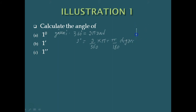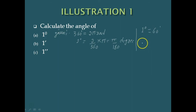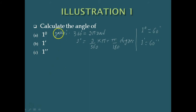They have also given that 1 degree is equal to 60 minutes of arc, and 1 minute of arc is equal to 60 seconds of arc. Keeping all these parameters in mind, we proceed with this problem.